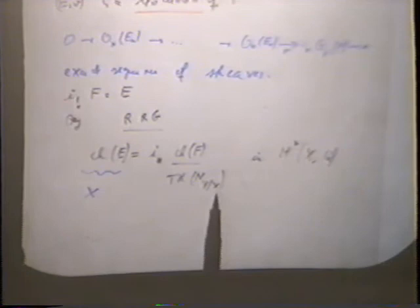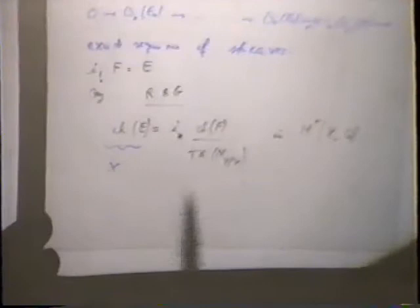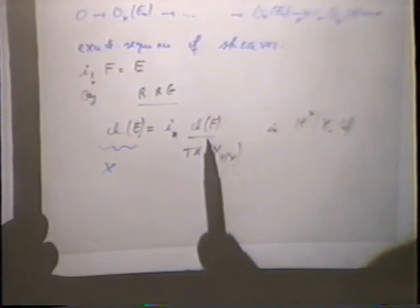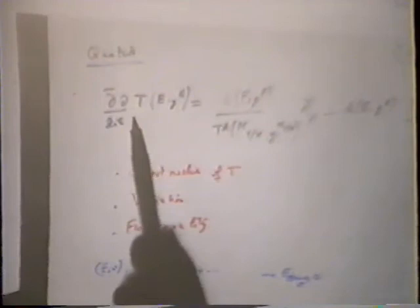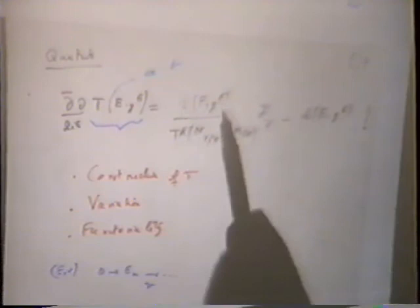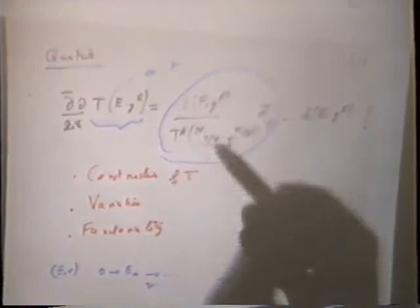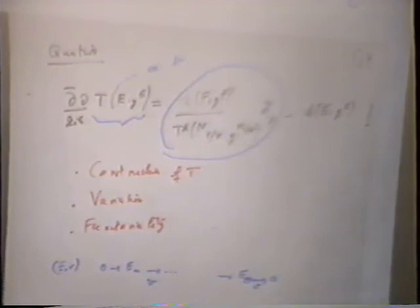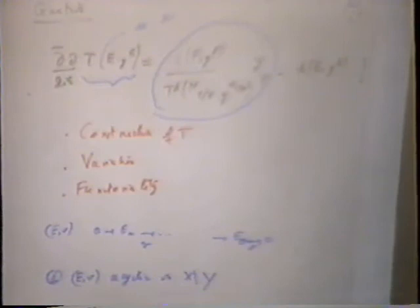Riemann-Roch-Grothendieck tells us that in the cohomology of X, the Chern character of E• can be represented by the direct image of the Chern character of F divided by the Todd class of the normal bundle. The question arises whether we can represent both sides in terms of differential forms and solve a natural double transgression equation — producing canonically a current T(E, g_E) on X solving dbar·d of T (with 2i pi) equal to the difference of the Chern character form of E• and a Chern-Weil current of integration on Y.